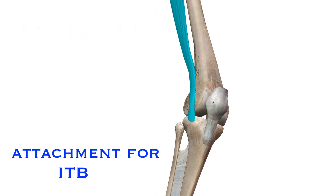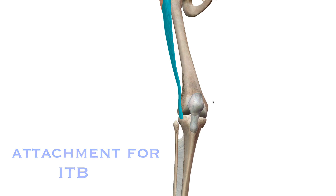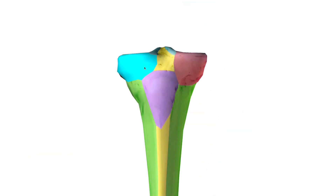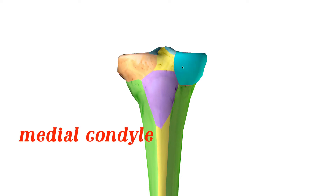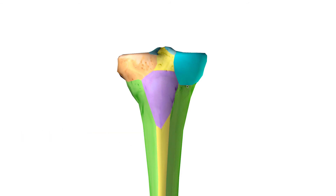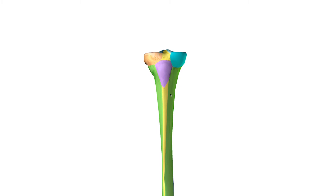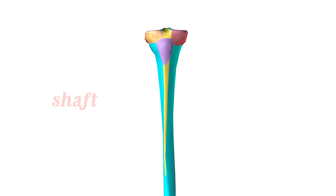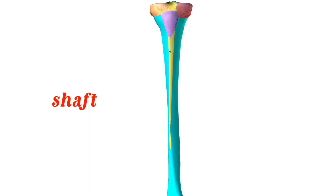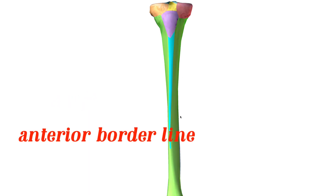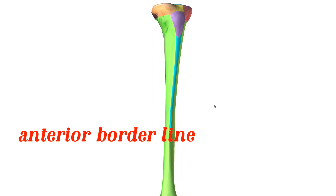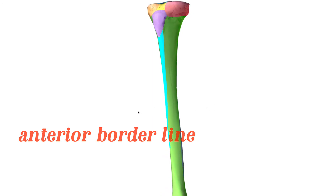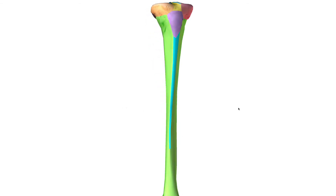On the medial side, we have the medial condyle, which is a connection point for your MCL. And then of course you have the shaft of the bone, and this anterior borderline in the middle. One of the interesting things about your tibia is that it's subcutaneous — all bones are subcutaneous, meaning they are under the skin — but the tibia especially so.